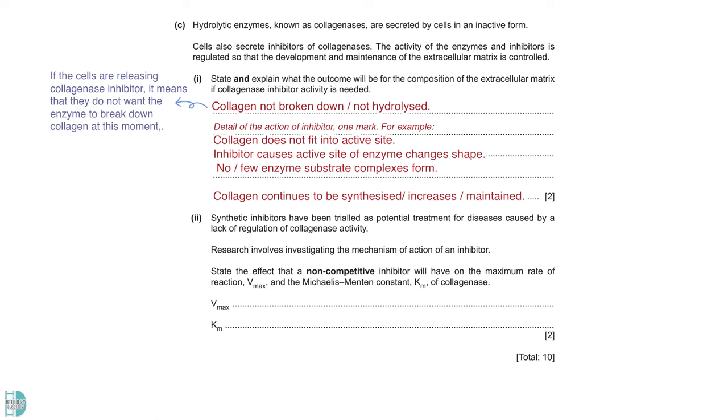Question 2 is about the effect of a non-competitive inhibitor on Vmax and Km of an enzyme. You need to remember the graph to answer this question. Vmax will decrease while Km remains unchanged.